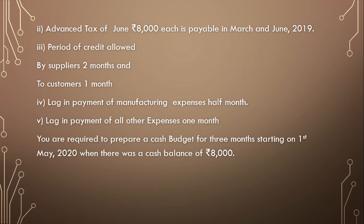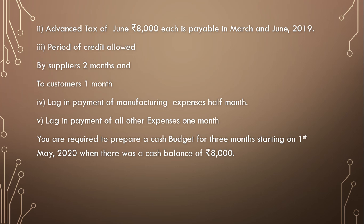You are required to prepare a cash budget for three months starting on 1st May 2020, when there was a cash balance of rupees 8,000. So we have to prepare three months cash budget starting on 1st May — that is for May, June, and July. Let us solve this example.